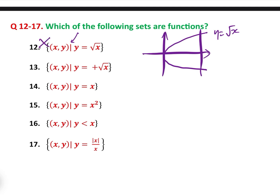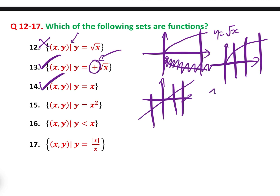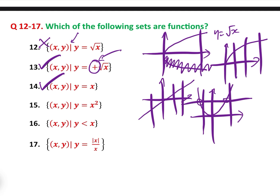Number 13: the set of (x, y) such that y is the positive part of root x. That basically gets rid of the negative part, so it is only the upper portion of the graph, and that passes the vertical line test — so that is a function. Number 14: the set of (x, y) where y equals x — clearly that passes the vertical line test, so that is a function. Number 15: the set of (x, y) such that y equals x squared — that's the traditional quadratic. It passes the vertical line test. A lot of people get this wrong by inadvertently using the horizontal line test; remember, the horizontal line test is for inverse functions, not for determining if something is a function.